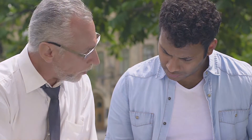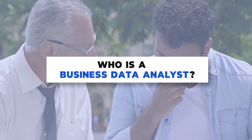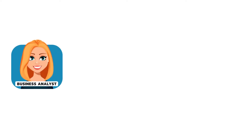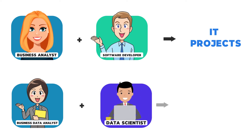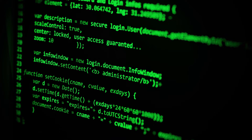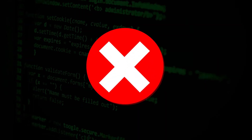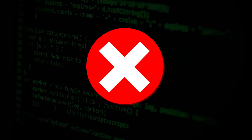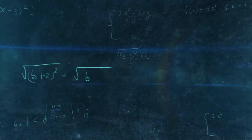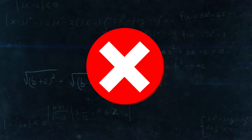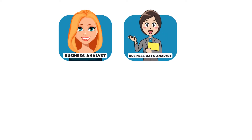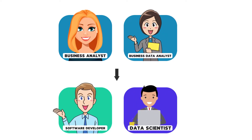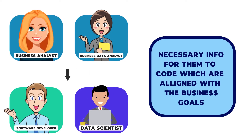Let us first focus on understanding who a business data analyst is. Similar to how business analysts work with software developers on an IT project, business data analysts work on analytics projects with data scientists. Business analysts don't write code for an IT project. Similarly, business data analysts, or BDAs, won't build any detailed mathematical model for an analytics project. But they give developers and data scientists all the necessary information to develop their code and models aligned with the business goals.